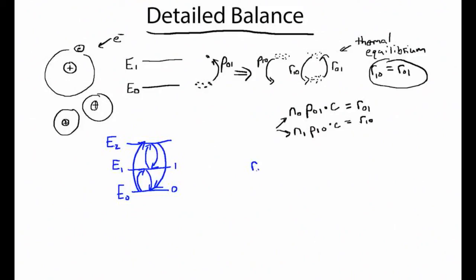The rate of going from 0 to 1 now includes: the number of atoms in the ground state times the probability of going directly to the first energy state, plus those who transition up to the highest energy state and then come back down into the middle state. And this doesn't even account for more esoteric pathways like going up to the highest state, back down, and then up into the middle state. With many energy levels, you end up with a huge number of pathways, making this very difficult to solve.